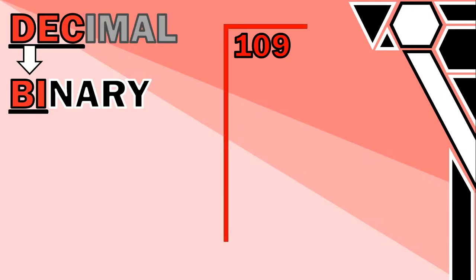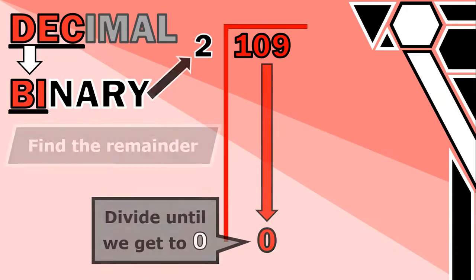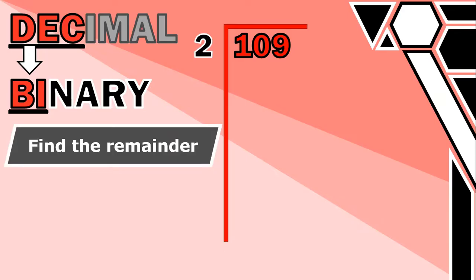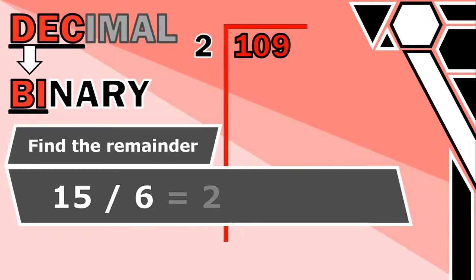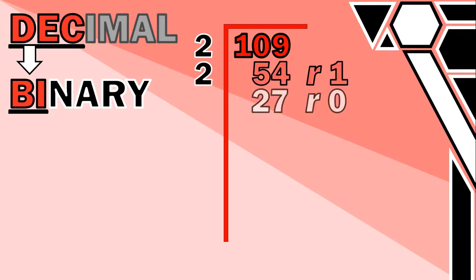We take the number to be converted and continually divide it by the base we want — in this case 2, because we want binary — and we keep going until we reach 0. Each time we divide, we record the remainder. Remainders are not the digits after the decimal point on a calculator; they're what's left over after dividing. For example, 15 ÷ 6 = 2 remainder 3. So: 109 ÷ 2 = 54 remainder 1. Then 54 ÷ 2 = 27 remainder 0. Then 27 ÷ 2 = 13 remainder 1.